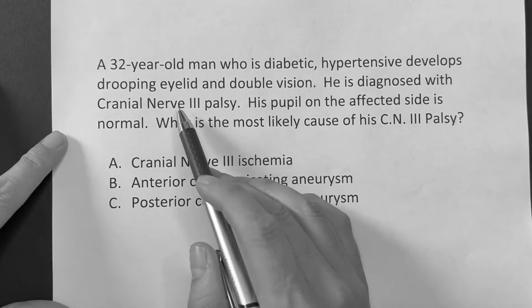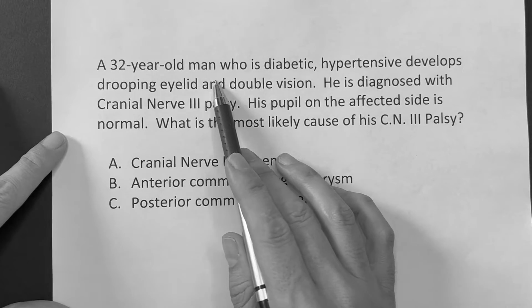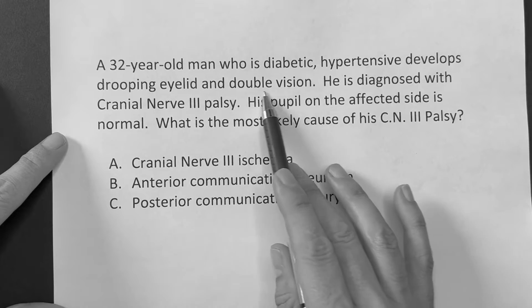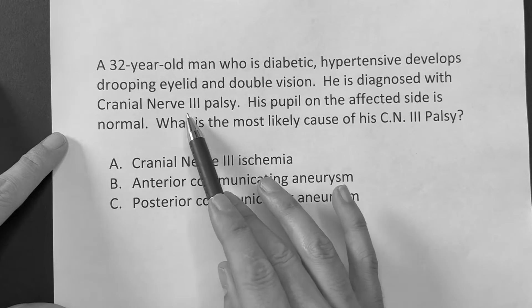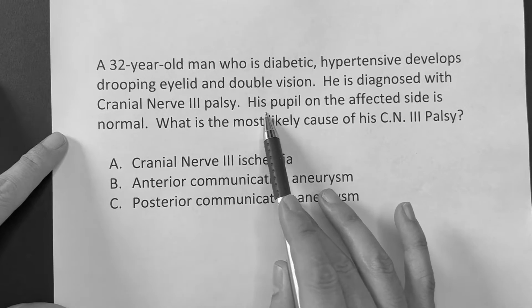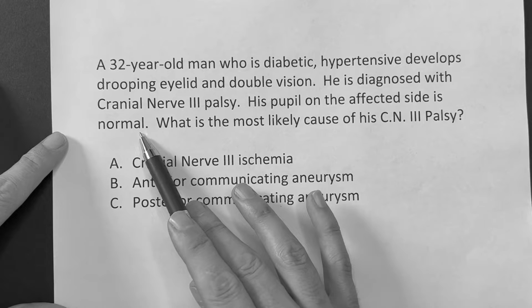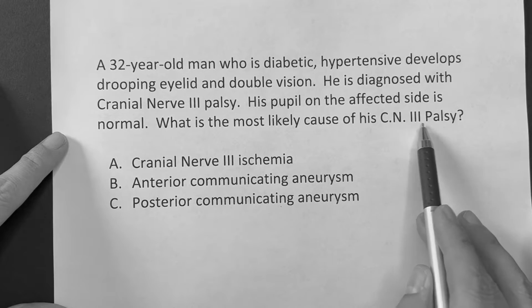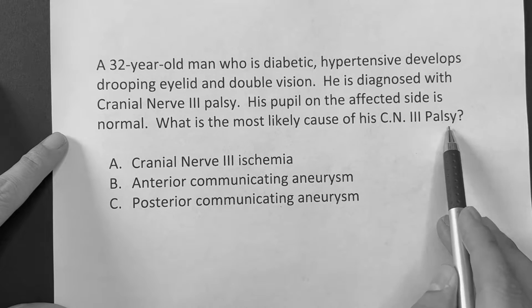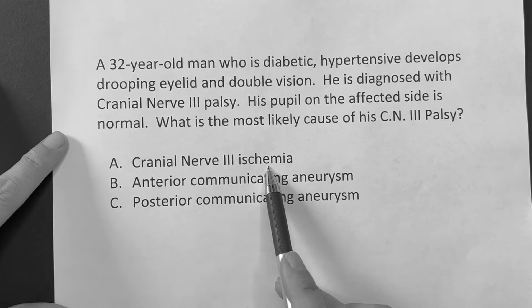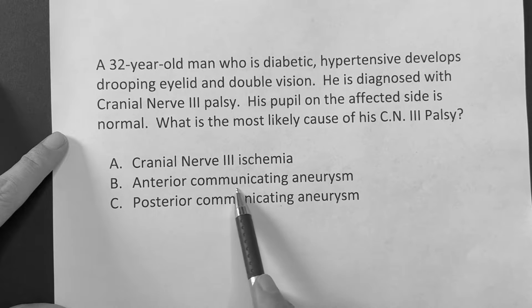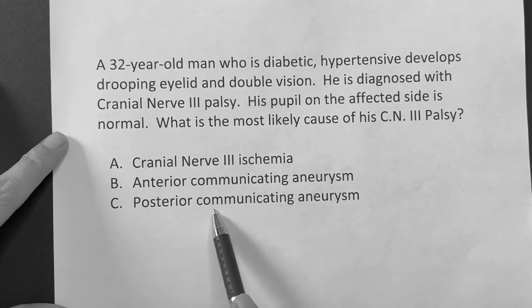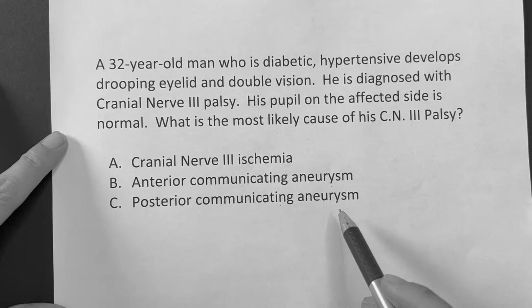The question reads: a 32-year-old man who is a diabetic hypertensive develops drooping eyelid and double vision. He is diagnosed with cranial nerve 3 palsy. His pupil on the affected side is normal. What is the most likely cause of the cranial nerve 3 palsy? Is it A, cranial nerve 3 ischemia? Is it B, anterior communicating aneurysm? Or is it C, posterior communicating artery aneurysm?